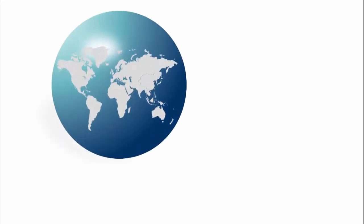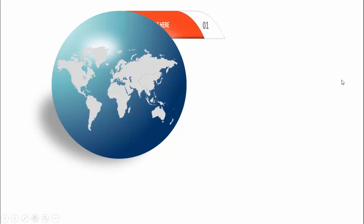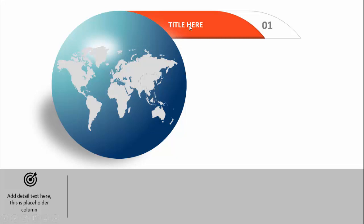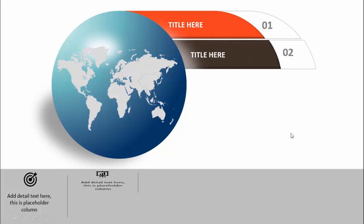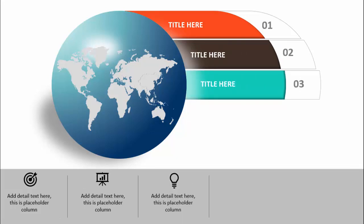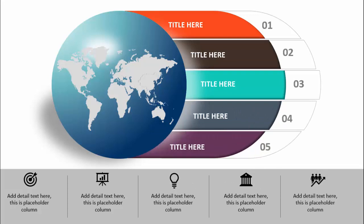In today's tutorial, I'm going to show you how to create five options with a globe or an atlas. This is how the slide works — I have created a sphere shape and put the world map here. You can add a shadow effect, and when you click it will show the first option with a title, option number, icon, and detailed text. With different color combinations it shows options two through five.